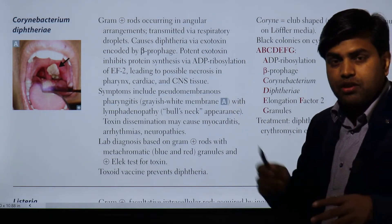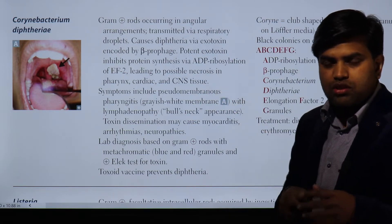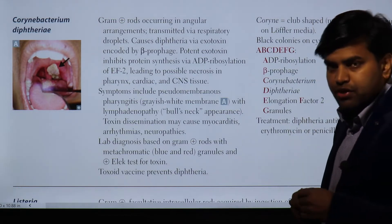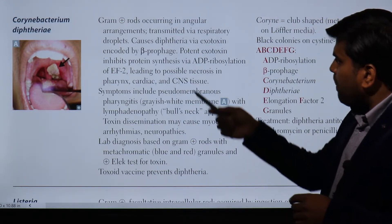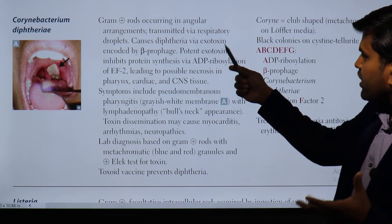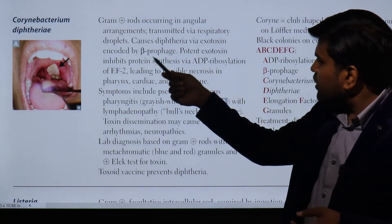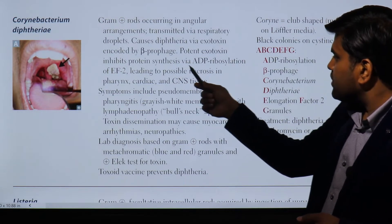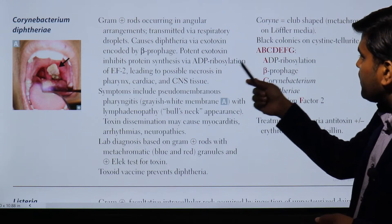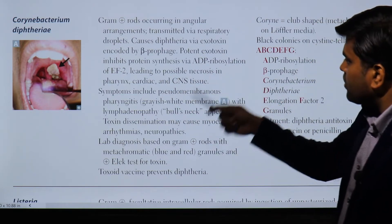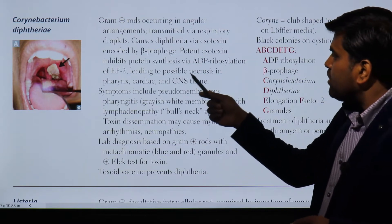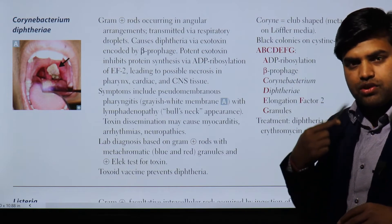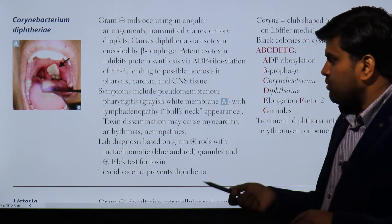The exotoxin inhibits protein synthesis by inhibiting elongation factor 2 - Corynebacterium diphtheriae and Pseudomonas aeruginosa are the two bugs that inhibit protein synthesis by inhibiting elongation factor 2. This potent exotoxin is encoded by a beta-prophage. It inhibits protein synthesis by ADP ribosylation of elongation factor 2, leading to possible necrosis in the pharynx, cardiac, and CNS tissue.